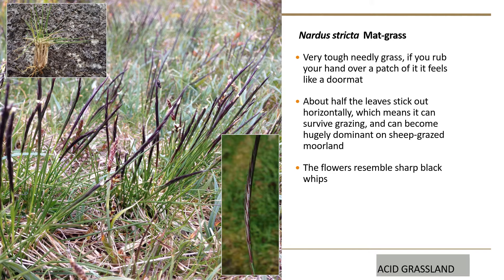Now another needley grass: mat grass, Nardus stricta. Superficially you might say it's just another needley grass, but it's dramatically different from wavy hair grass. If you rub a patch of it, it feels like a doormat. And look at the way the leaves stick up in such an abrupt manner — compared with wavy hair grass, which is quite droopy and lax, there's a big difference in general appearance.